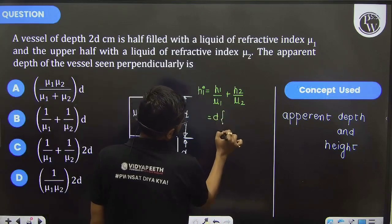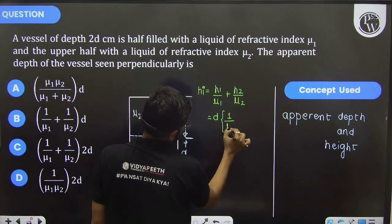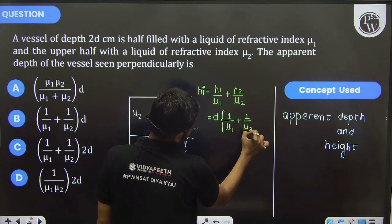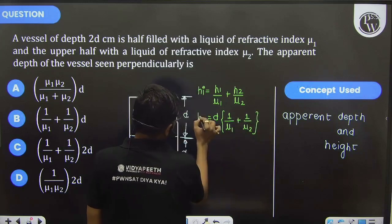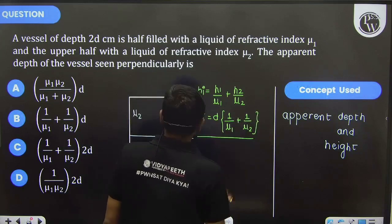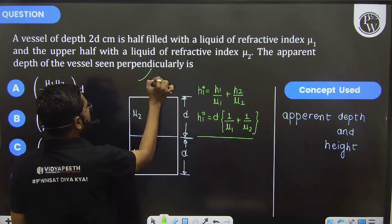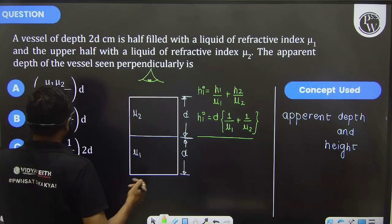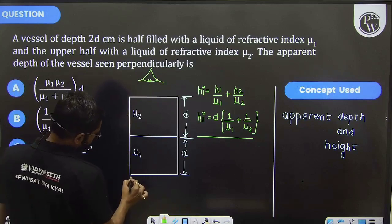This h₁ is d, so we can take common: d times (1 over μ₁ plus 1 over μ₂). So this is the apparent height. Height means whenever any observer is just observing, the height which has been observed of this base will be somewhere here.